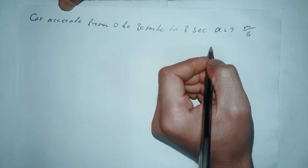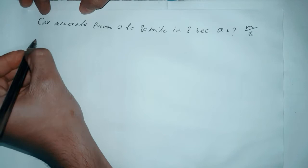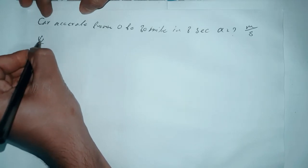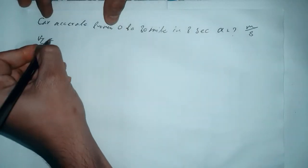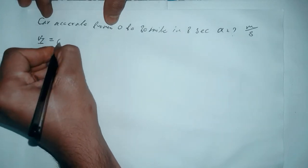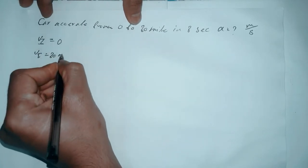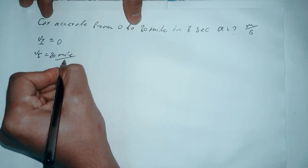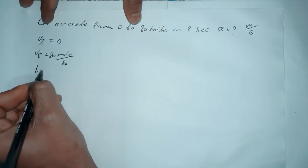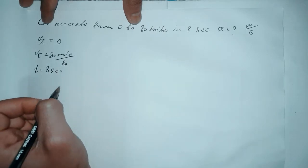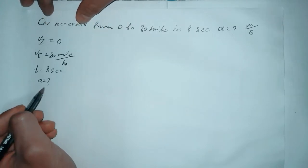First of all we are going to list up what we have. We have the given details: the initial velocity is 0, meaning it is in a stationary position. Our final velocity is 80 miles per hour, and the time given is 8 seconds. The acceleration is the one that is missing, so we have to find that.